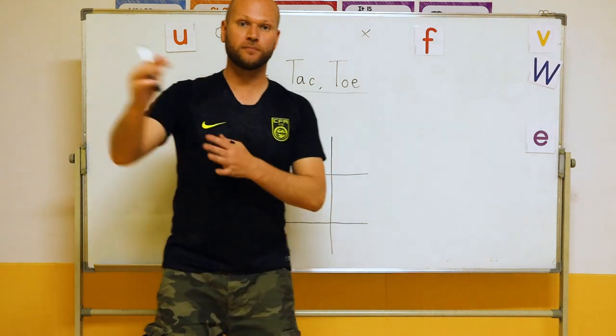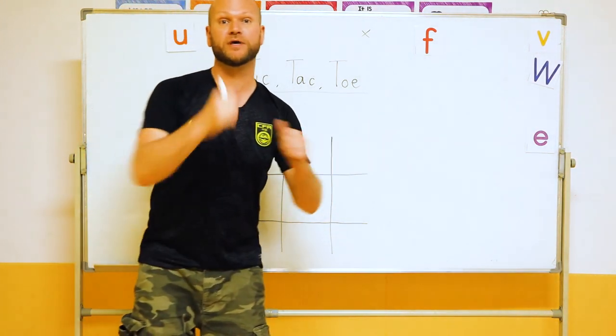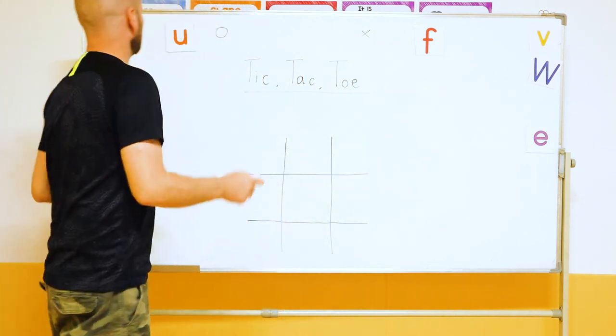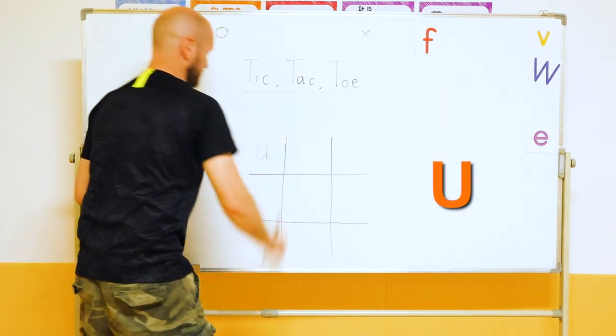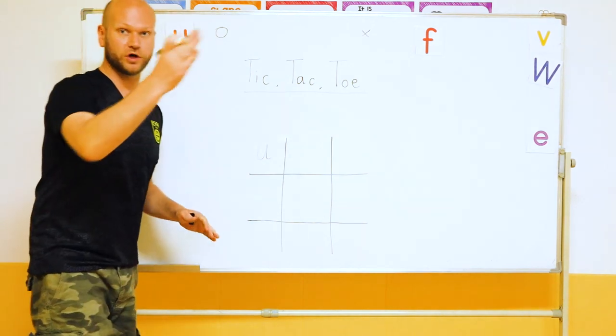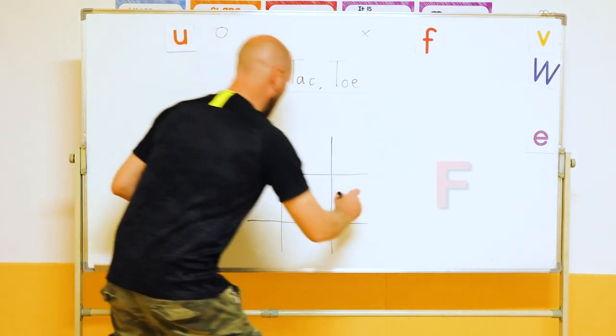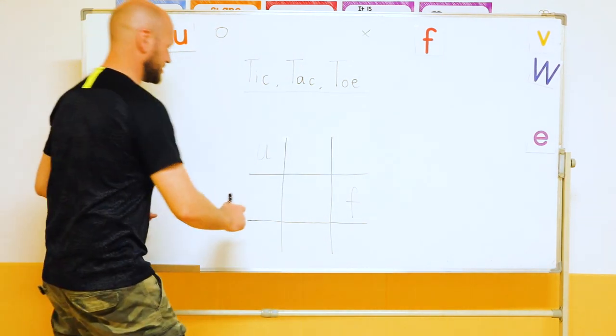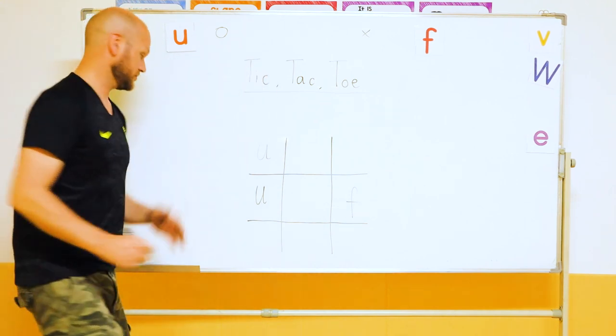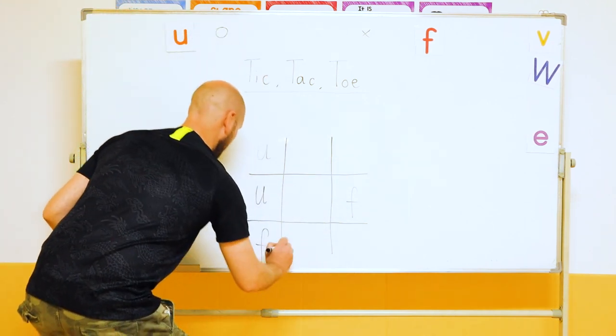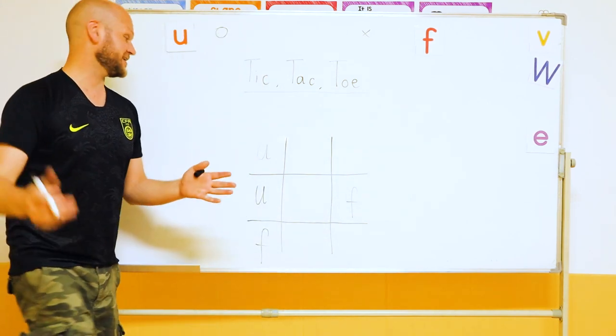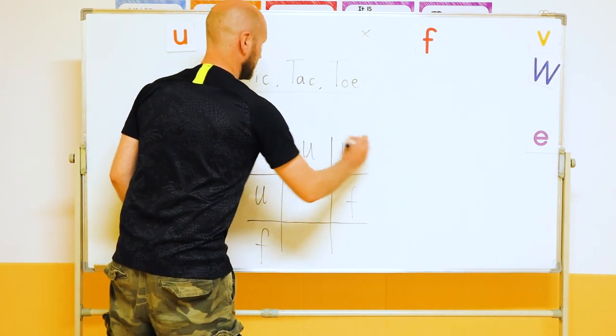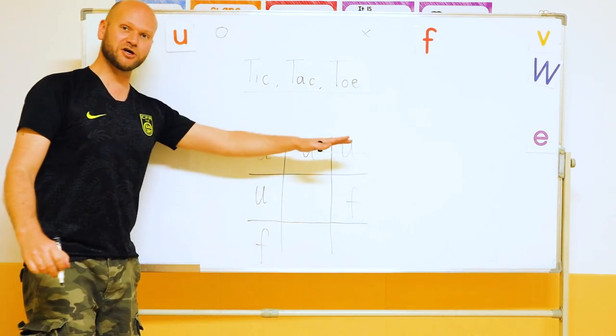So how to play. Choose one student from this team. Maybe you can paper, scissors, stone, see who goes first. So one student from this team is team U. They come up, write a U. One student from this team. F. Keep going. Another student from this team comes here, goes for a U. This team goes F. So you get the idea. Practicing writing the letters until obviously you have three in a row. Bingo!